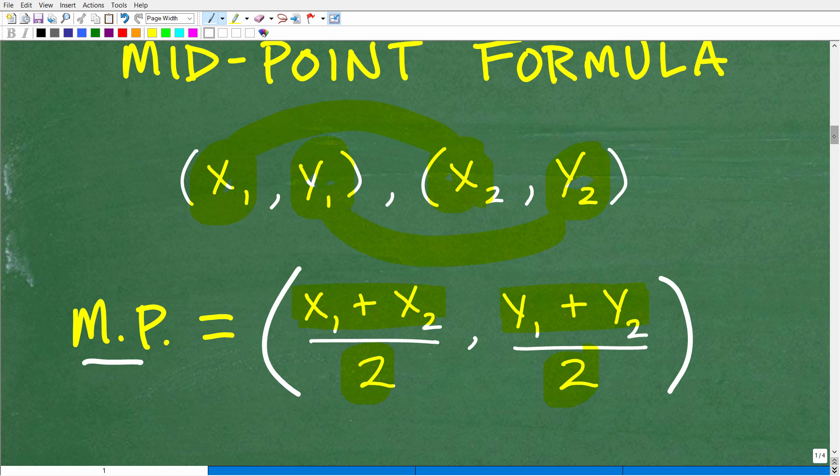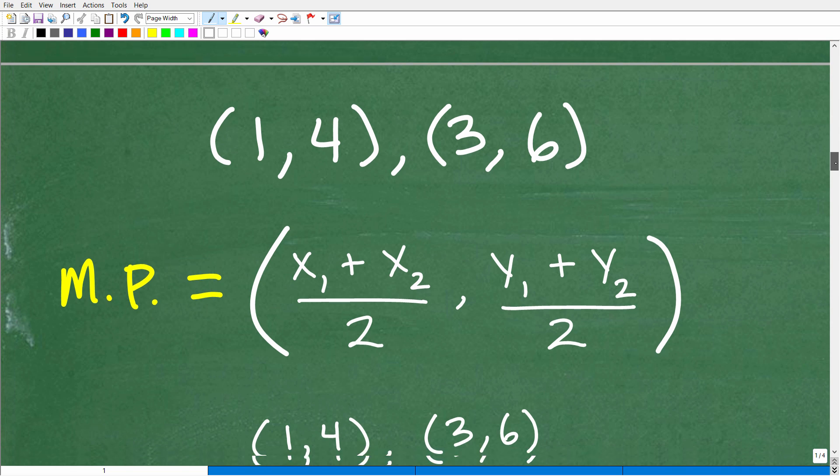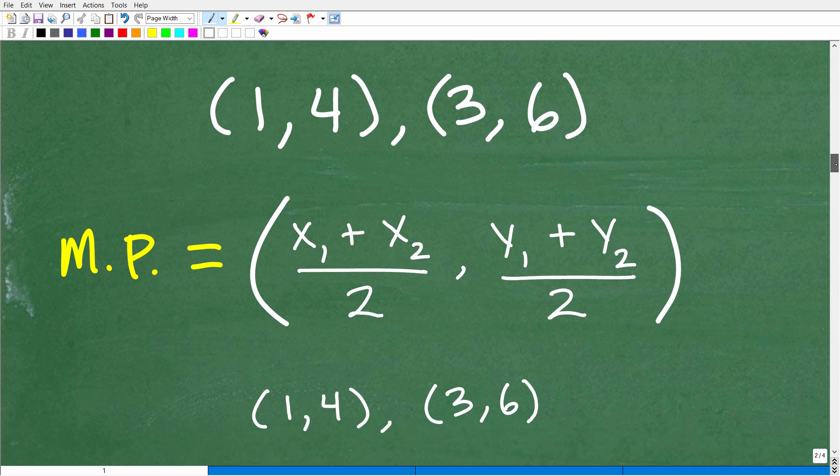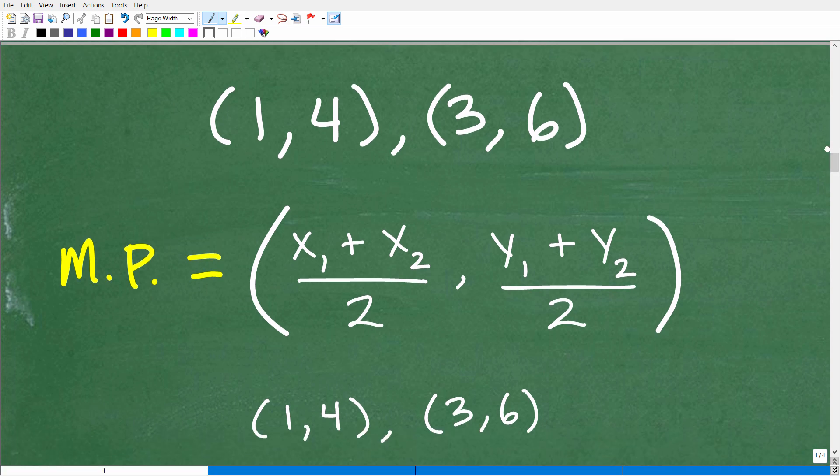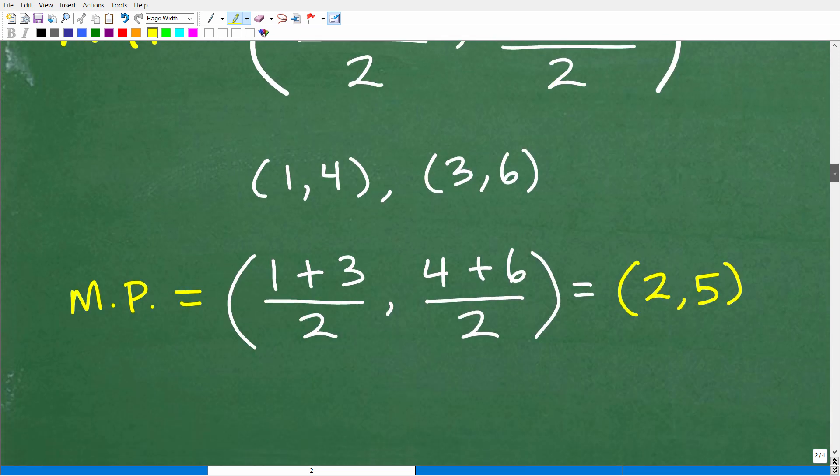And when we do this, we will get the midpoint of whatever two points we're looking at. So let's go ahead and solve this problem now. So here's our coordinates, 1, 4, and 3, 6. So we're going to find the average. So it's going to be the average of 1 and 3, and then the average of 4 and 6. So here's the formula. Let's go ahead and follow the formula.